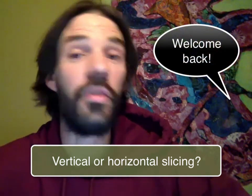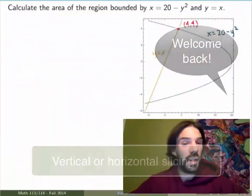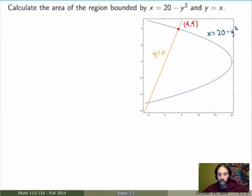Okay, so let's now do a second example which is even more subtle. Suppose I ask you to calculate the area of the region bounded by the curve x equals 20 minus y squared and y is equal to x. First thing you want to do is sketch the graph of these functions. So the line y equals x is in orange here and the blue curve is x equals 20 minus y squared. And this is the region that I'm interested in.